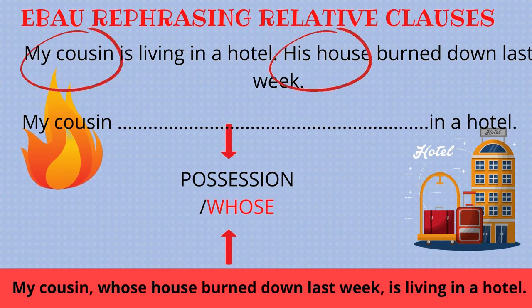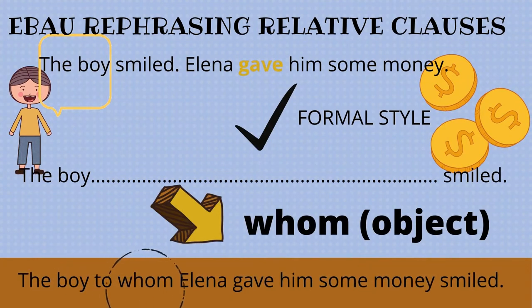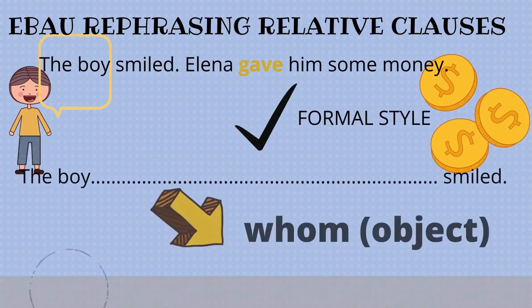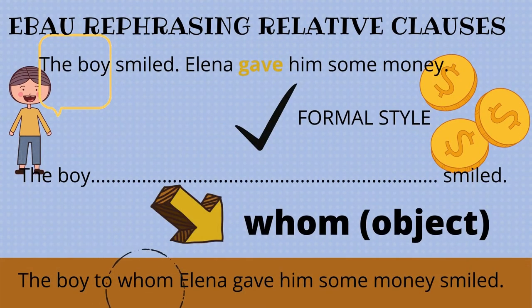The second example is about relative clauses with prepositions and how to rewrite two sentences using either a formal or informal style. Consider: 'The boy smiled.' and 'Elena gave him some money.' We need to join these two sentences starting with 'the boy' and ending with 'smiled'. The formal option, typical of written language, uses 'whom' since it functions as the object and the antecedent is a person — and we must keep the preposition in front: 'The boy, to whom Elena gave some money, smiled.'